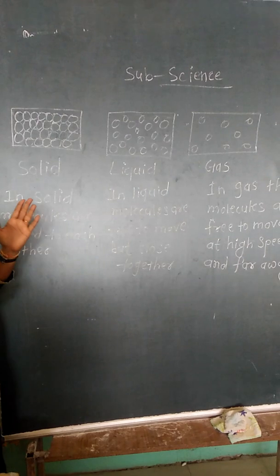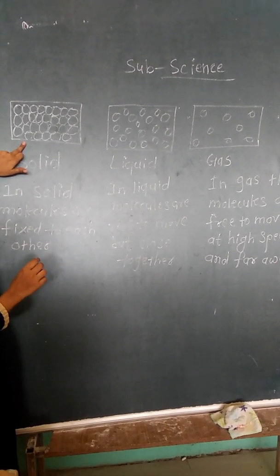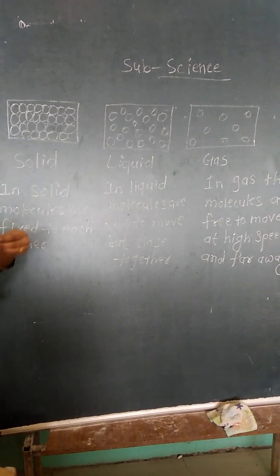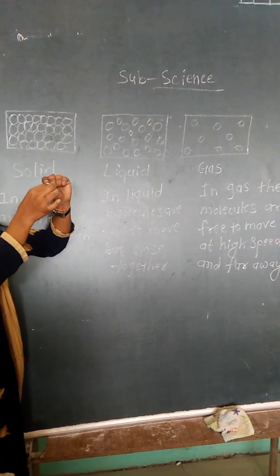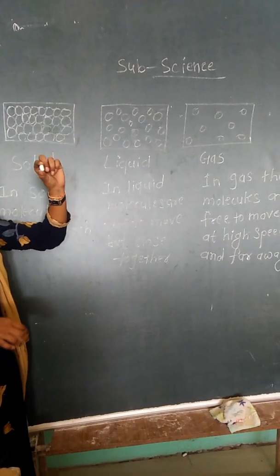So this is the solid molecule. What is this? Solid molecule. We have to see this chalk. This chalk molecule is fixed. This is fixed molecule. So this is the solid substance.